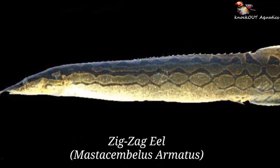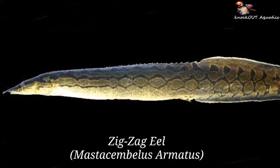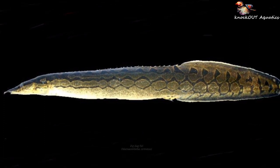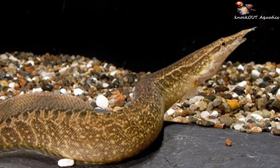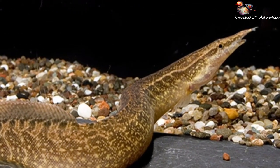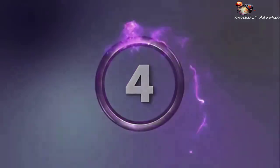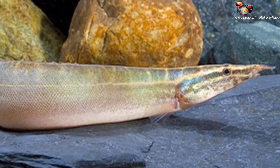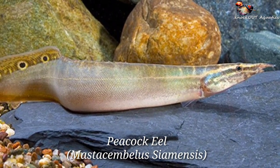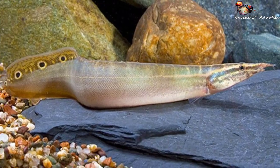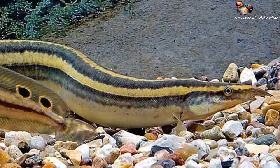Our third one is the zigzag eel — they can also reach about 40 inches in length. Our fourth one is the peacock eel, which can reach about 12 inches in length.